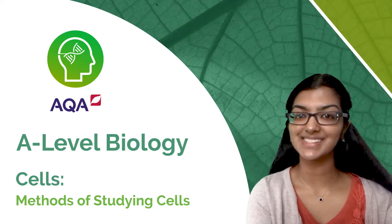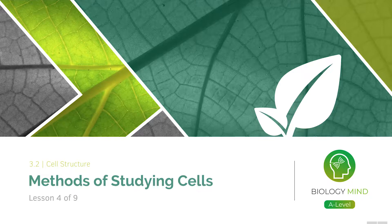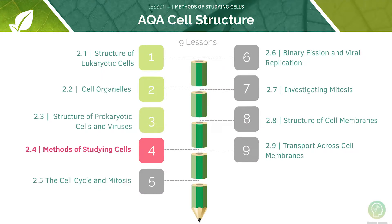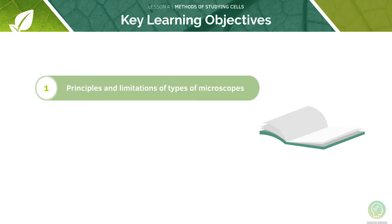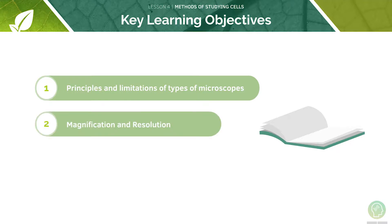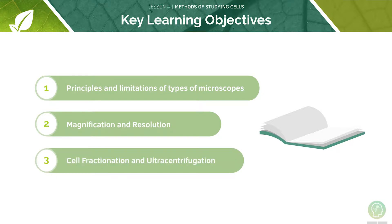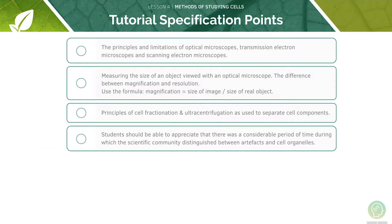Let's get started. Welcome to lesson four of nine in this tutorial covering the methods of studying cells. In the last lesson we learnt about differences in cell structure and function. Here are the key learning objectives for today's lesson: first, to look at different kinds of microscopes; next, magnification and resolution; and finally, cell fractionation and ultracentrifugation. Here are the AQA specification points for this tutorial — feel free to pause the video now and have a quick read through them before we begin.